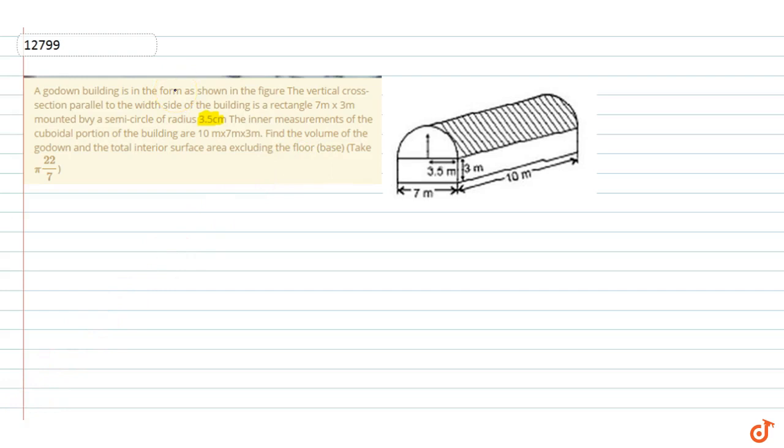If we write the volume first, what will happen? Volume of cuboidal plus volume of curved part. This is the curve, the cube part is the cuboid.